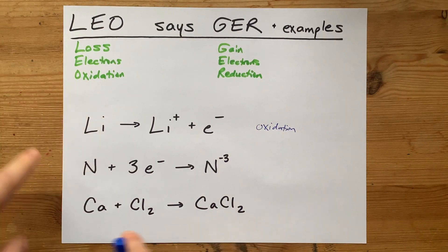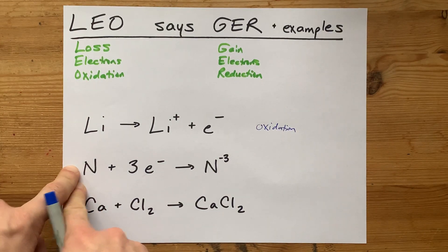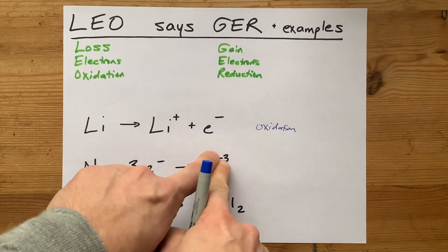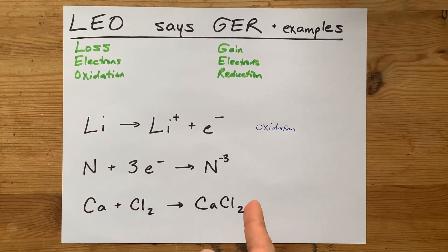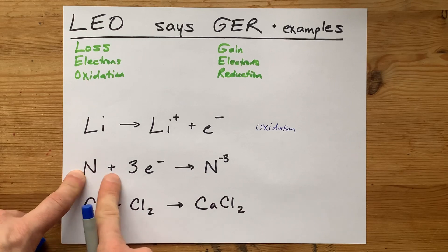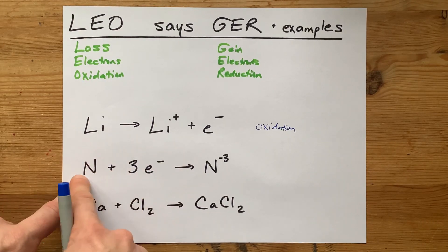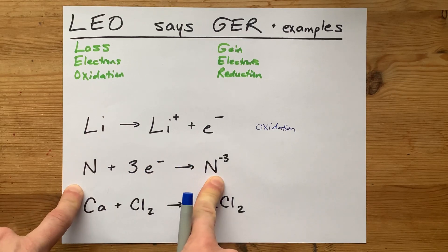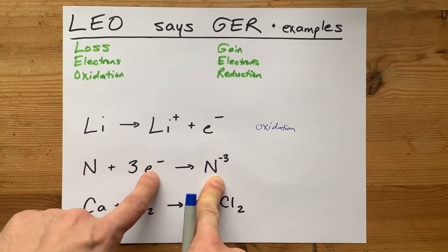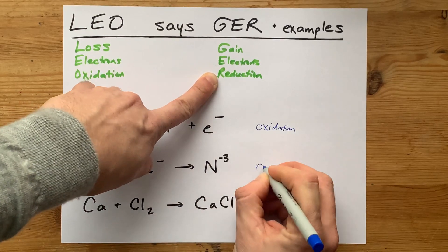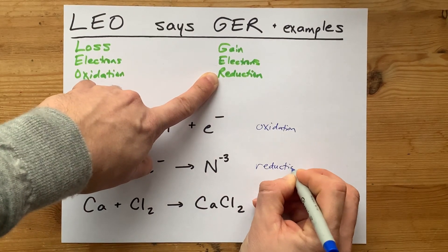Nice. Here we have nitrogen and it is absorbing three electrons. It becomes an N minus three charged particle. That N has gained electrons because they have combined and two became one. If nitrogen is gaining those electrons, a gain of electrons is a reduction. Nice.